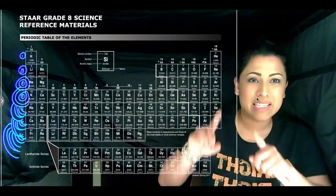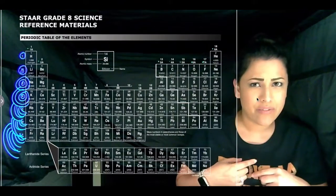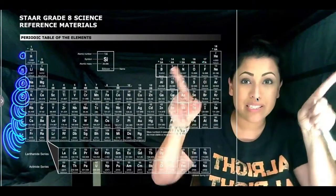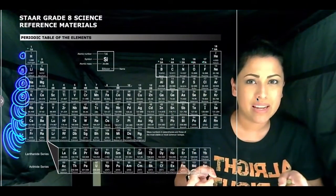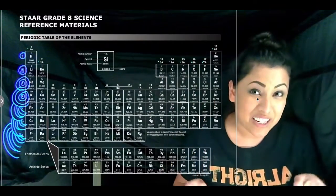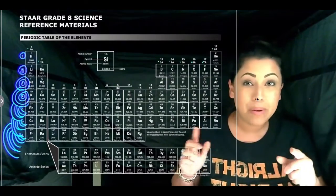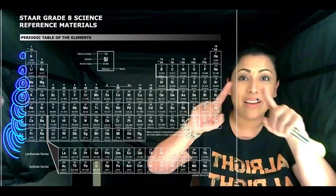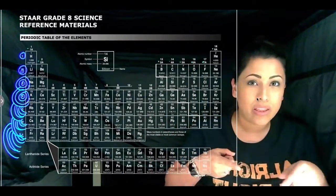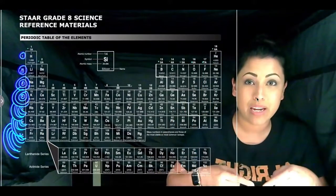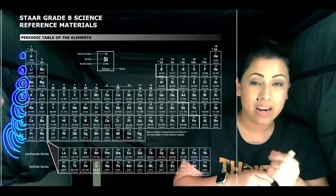Now you may remember when I said valence electrons in another video, I'm pointing to the outside when I say it because valence electrons are the number of electrons on the outermost ring. Not how many electrons the atom has, but the valence electrons are only the ones on the outermost ring whenever you're looking at the atom in a Bohr model.